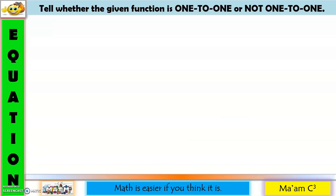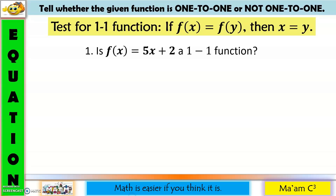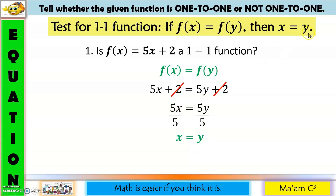This time, let's have equations. Here is a test for one-to-one function. Like what I've mentioned in the definition earlier, if f(x) equals f(y), then x equals y. Is f(x) = 5x + 2 a one-to-one function? So f(x) equals f(y): 5x + 2 equals 5y + 2. The 2s cancel out, leaving 5x = 5y. Dividing both sides by 5, we get x = y. Since x equals y, then f(x) = 5x + 2 is a one-to-one function.